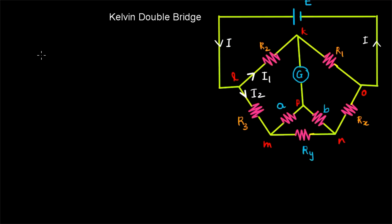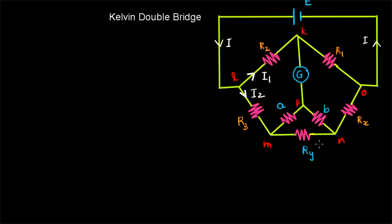Hi guys, welcome to FEMI Academy. In this video we are going to learn about the Kelvin double bridge. In the Kelvin bridge we have to consider the resistance of the yoke or the connectors while considering the balance equation of a bridge. If you are able to connect the yoke to a point P suitably, then we are able to reduce the effect of the yoke. Here in this Kelvin double bridge, a second set of arms are added with resistances A and B so that we can completely avoid the effect of the yoke resistance RY.